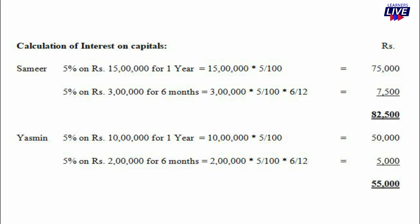How will the additional capital be introduced? July 1st — that is 9 months remaining but interest for 9 months: Rs. 3,00,000 x 5% x 9/12 = Rs. 11,250. Then Rs. 3,00,000 x 5% x 6/12 = Rs. 7,500. Total for Samir: Rs. 82,500. For Yasmin: Rs. 10,00,000 x 5% = Rs. 50,000. Rs. 2,00,000 x 5% x 6/12 = Rs. 5,000. Total: Rs. 55,000.